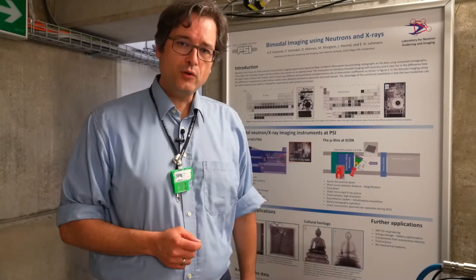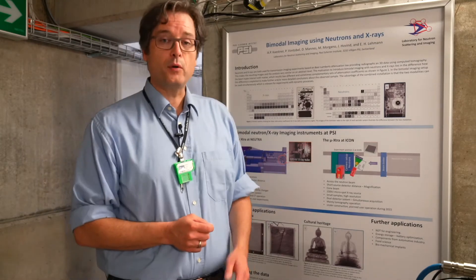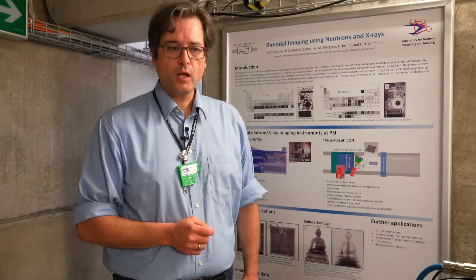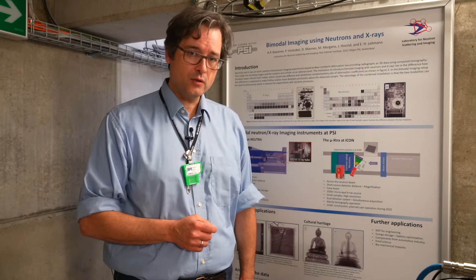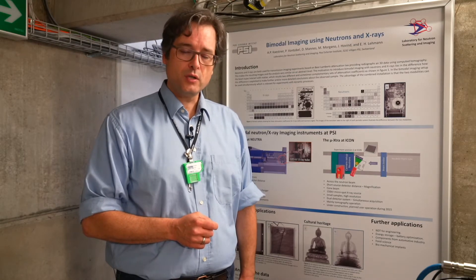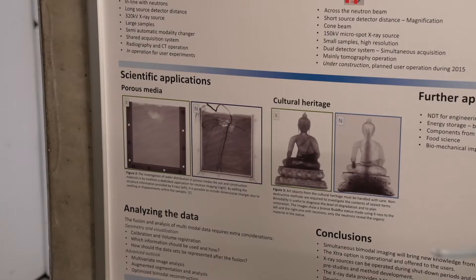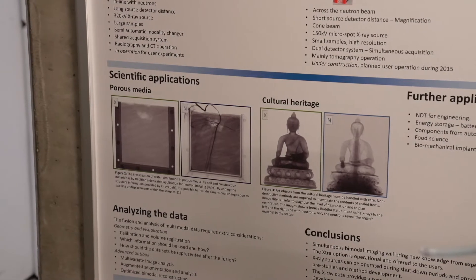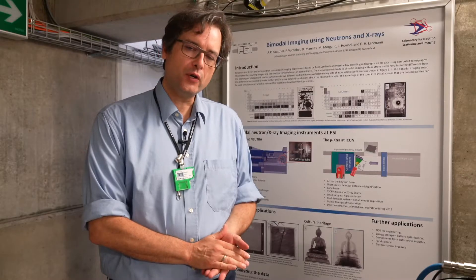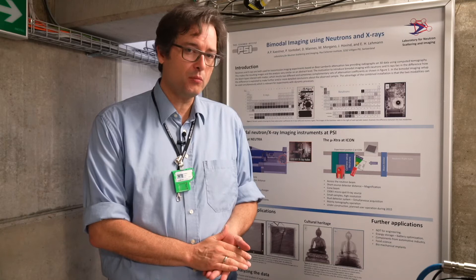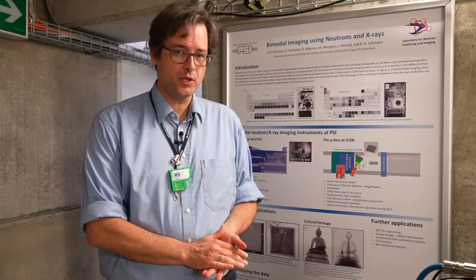The way neutrons and X-ray photons interact with matter is very different. While X-ray photons interact with the electrons in the atomic shell, neutrons interact with the nuclei of the atoms within the sample. This is why neutron images yield different and partially complementary information when compared to X-ray images.